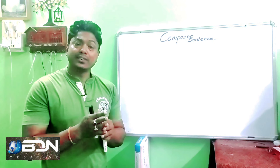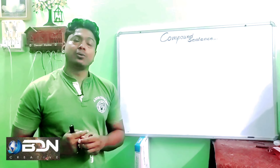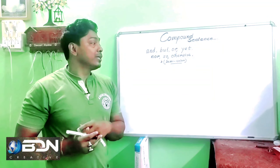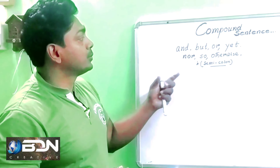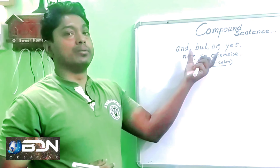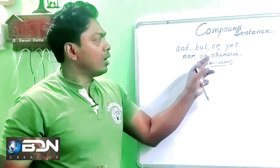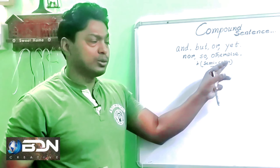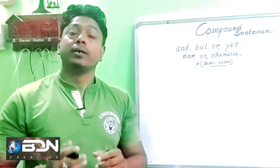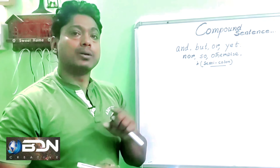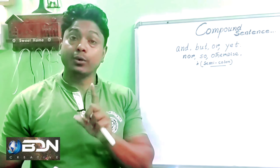A complex sentence is used differently from a compound sentence. We will not see the same conjunction used in both. A semicolon can also be used in place of a conjunction — this semicolon is not a conjunction itself.